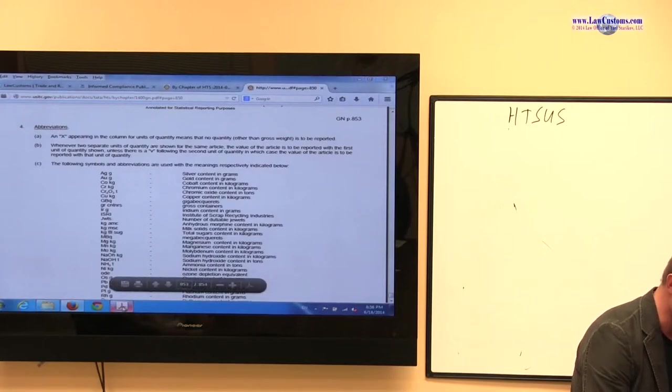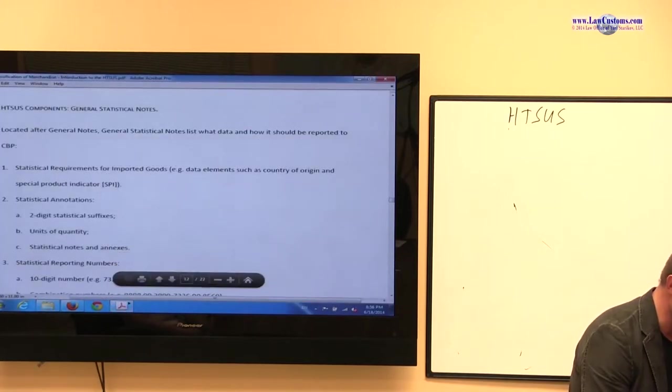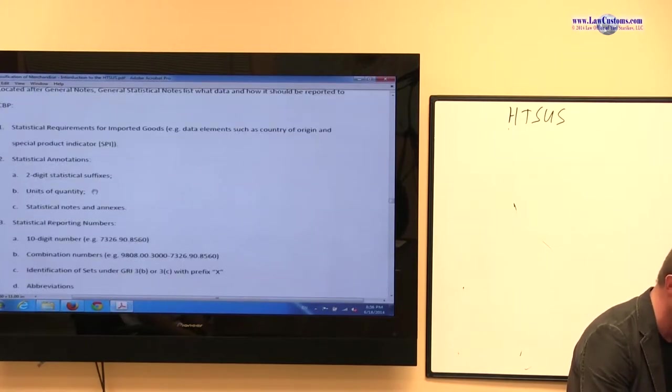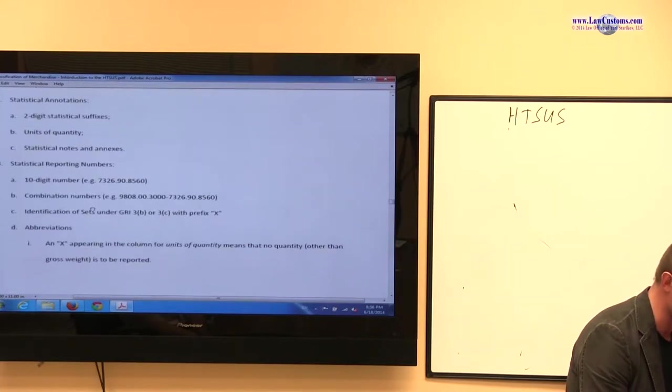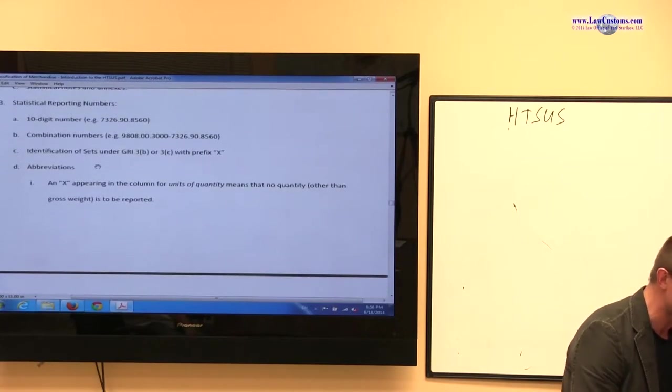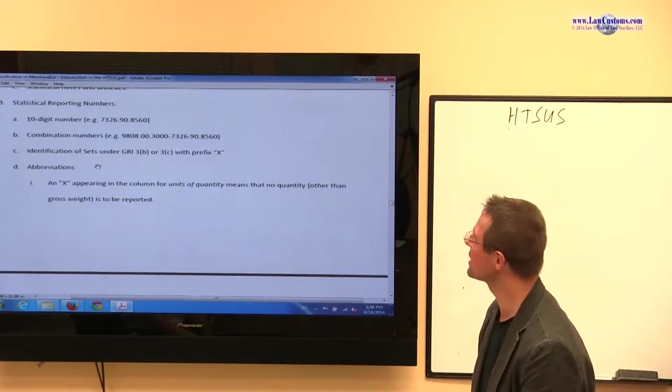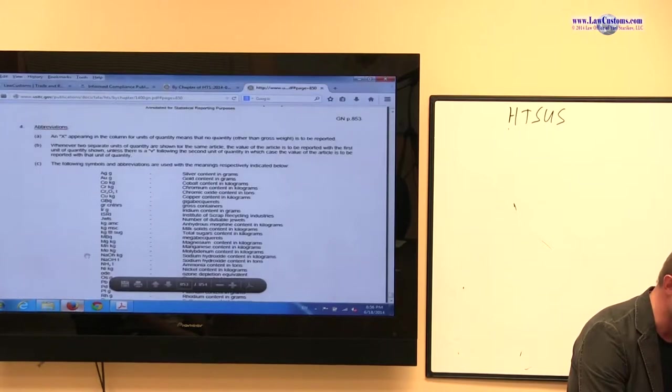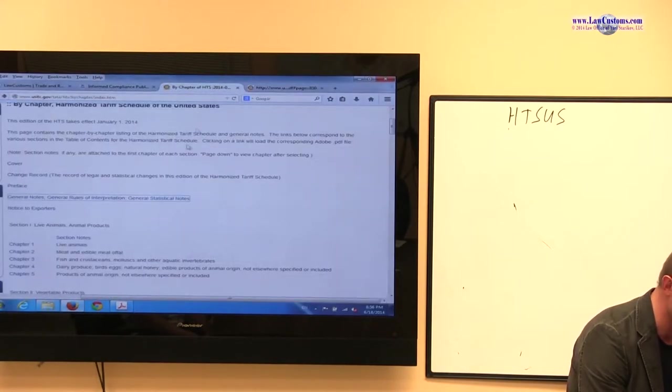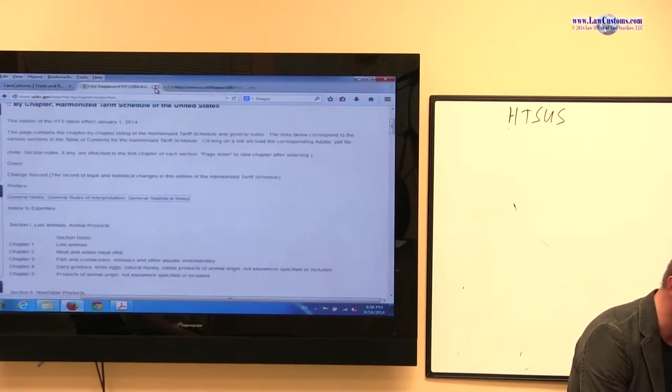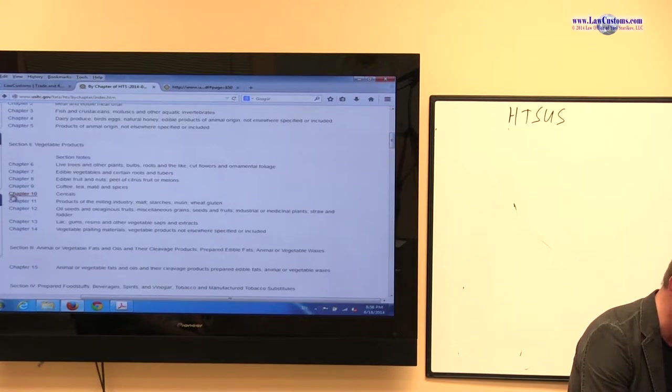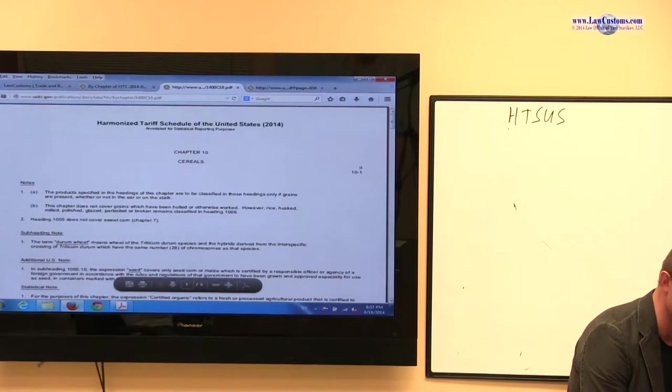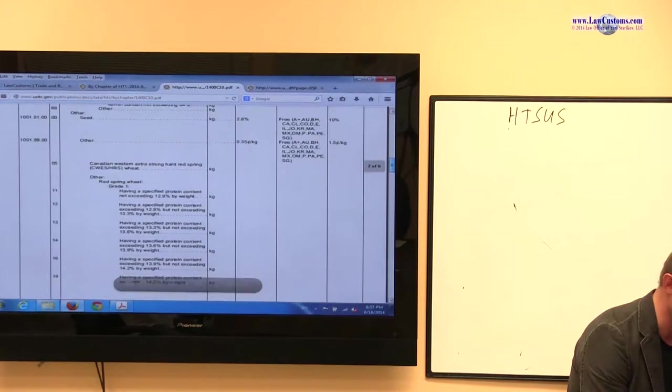All right. So, let's see, where are we? So statistical reporting number 10 digits. There are combination numbers. So, yes, we have, for example, classification tables which really give you 10-digit numbers. So let's say, let's pick Chapter 10, cereals. Okay? Who is hungry? All right? So let's take this example.